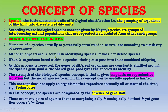Although appearance is helpful in identifying species, it does not define species. When two organisms breed within a species, their genes pass into their combined offspring. As this process is repeated, the genes of different organisms are constantly shuffled around the species gene pool, and the shared gene pool gives the species its identity.